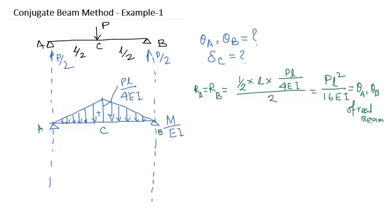By conjugate beam method, now it is time to determine the deflection, that is maximum deflection at the midpoint. As per the theory, the bending moment of the conjugate beam at the midpoint will be the deflection of the real beam at the midpoint.